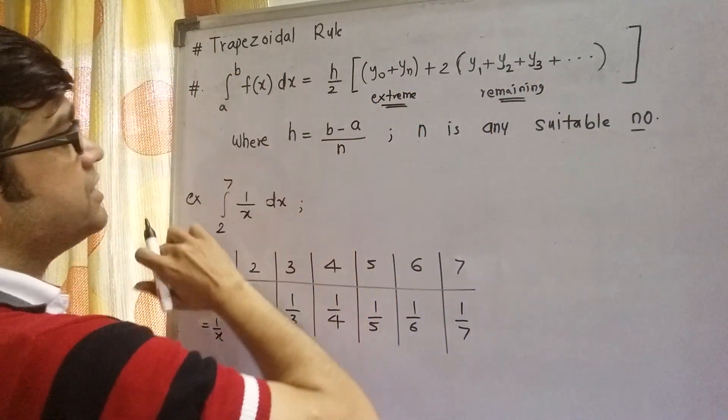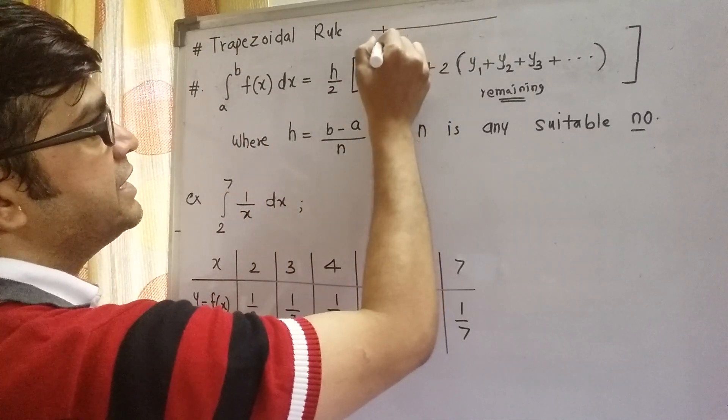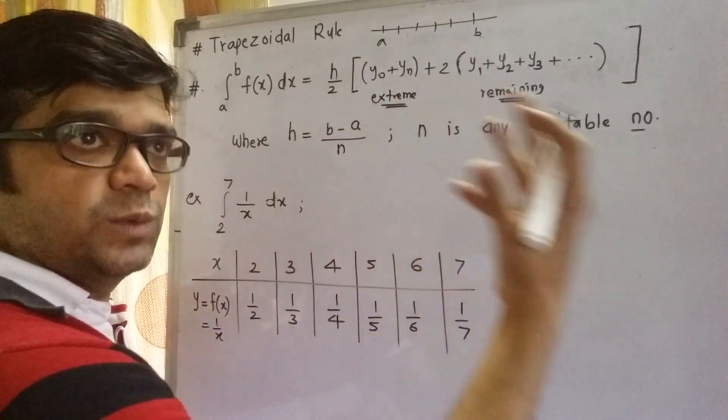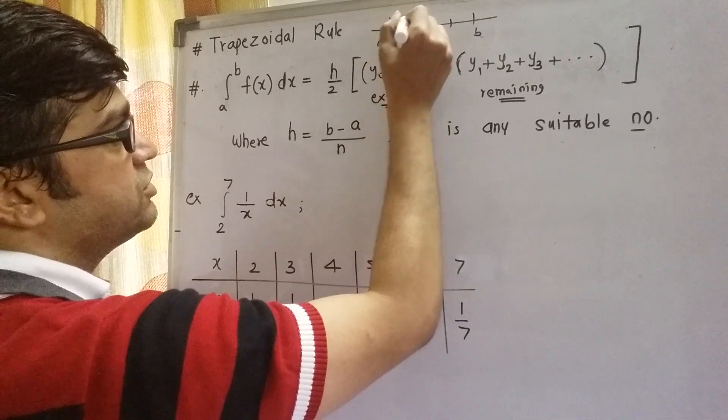Now what is this h? See, the limits of integration are a to b. So interval a to b is divided into a number of sub-intervals, and the width of each sub-interval is h.